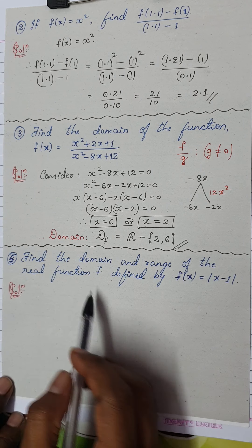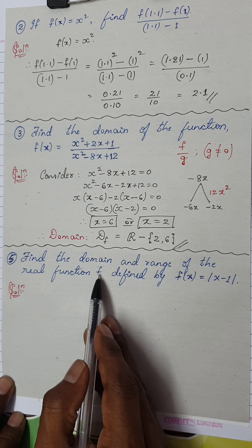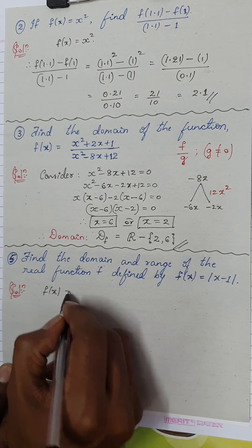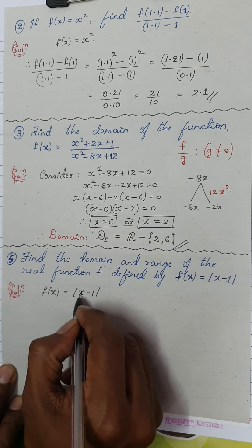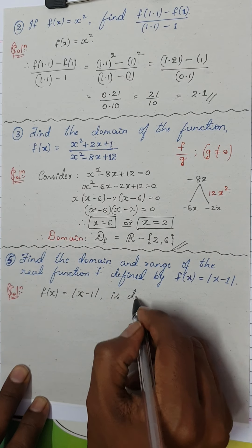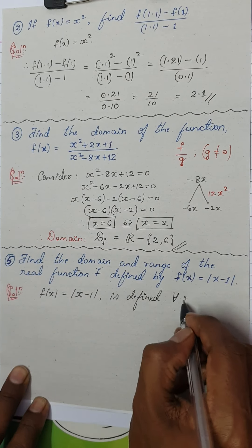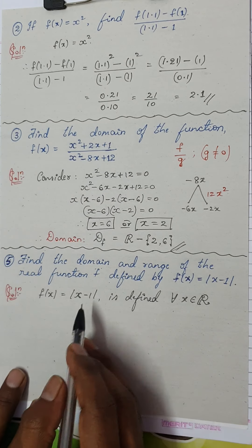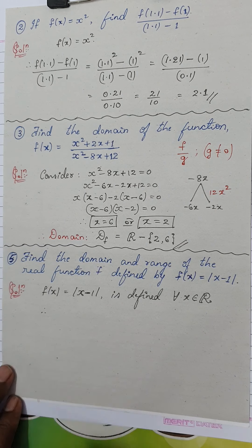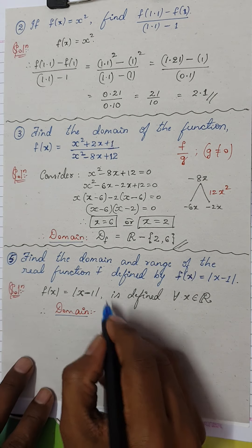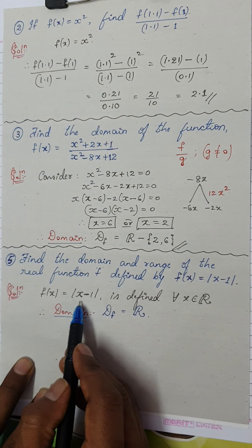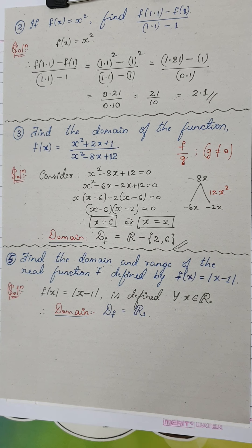Question number 5: find the domain and range of f(x) = |x − 1|. This is a modulus function, similar to f(x) = |x|. The function f(x) = |x − 1| is defined for all real values of x — there is no value of x for which it is undefined. Therefore the domain D(f) is all real numbers ℝ.